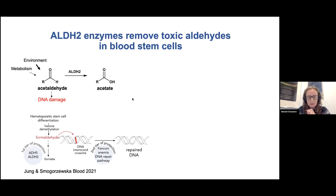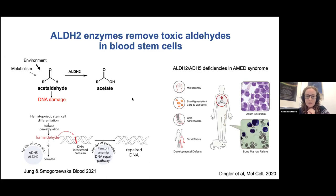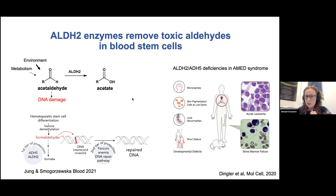ALDHs as a family are known to mark different blood stem cell niches. ALDH2, as well as ADH5, a closely related enzyme, have been shown to break down formaldehyde into formates. Formaldehyde is incredibly toxic, and if people have mutations in ALDH2 or ADH5, as well as problems with DNA repair, they get Ahmed syndrome, which is hallmarked by acute leukemia due to death of blood stem cells and a range of other defects. This led us to think that ALDH2 might be important in other stem cell compartments as well.